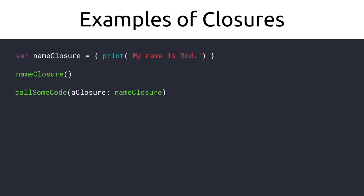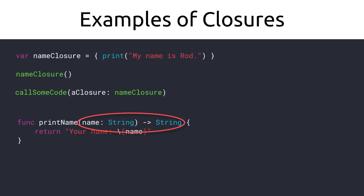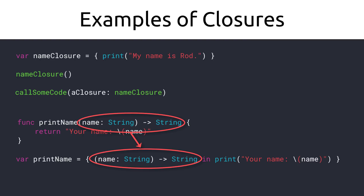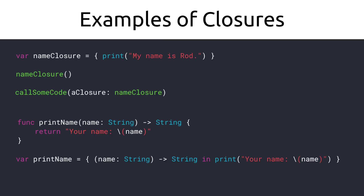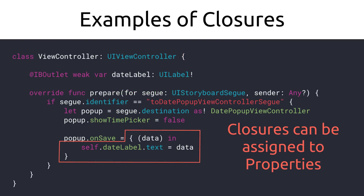So if closures are like functions without names, how do you pass in parameters or return a value? For example, how could you create a closure that represents a function where you pass in a name and return a string? You still use parentheses with the parameters defined inside followed by a return type, except in a closure you separate the parameters and return type from the rest of the code with the 'in' keyword. In a previous series about reusable pop-ups, we assigned a closure to a class property, which gets called later on by the pop-up class.